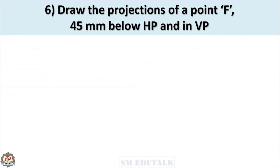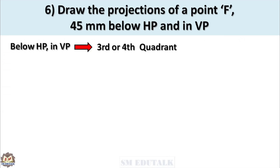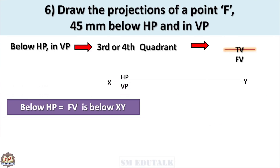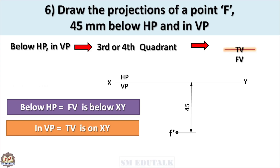Sixth problem: Draw the projections of a point F, 45mm below HP and in VP. Given condition: below HP, in VP — so point F may be in the third or fourth quadrant. Hence, the front view should come below the XY line and the top view should be on the XY line. Locate the front view F' 45mm below the XY line. Draw a projector vertically upward from F' until it intersects the XY line — mark that intersecting point as the top view F.